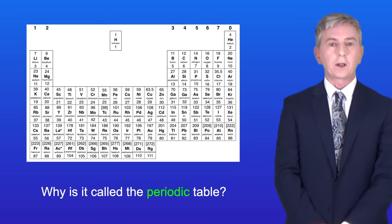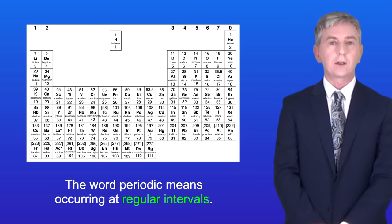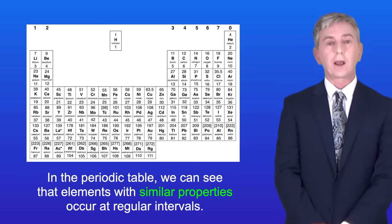So why is it called the periodic table? Well, the word periodic means occurring at regular intervals. And in the periodic table, we can see that elements with similar properties occur at regular intervals.